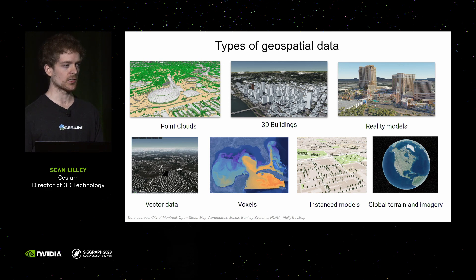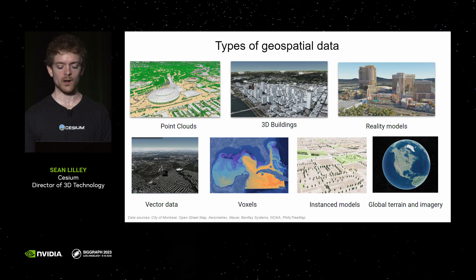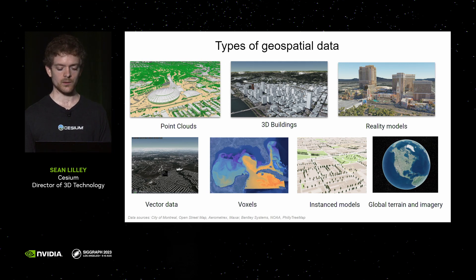We also have 3D buildings — this is a screenshot from our Cesium OpenStreetMap buildings dataset, which has global coverage of the world's buildings. Then we have reality models, which are typically produced from photogrammetry software: very high resolution textured meshes, typically a centimeter or better resolution. We also have vector data, which is points, lines, and polygons draped on the surface. Also voxel data — this screenshot is time-dynamic temperature data of the Gulf of Mexico. And we have instance models, such as this Philly tree maps dataset. Finally, we have global imagery and terrain.